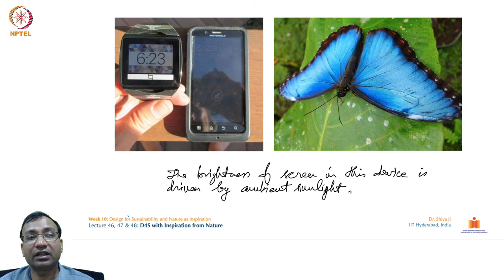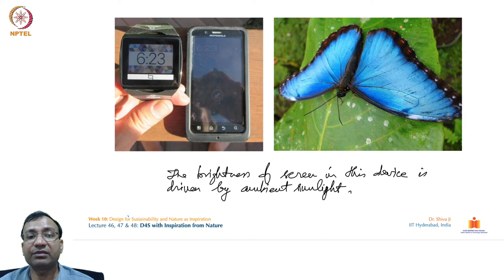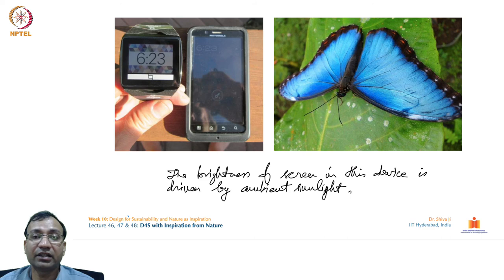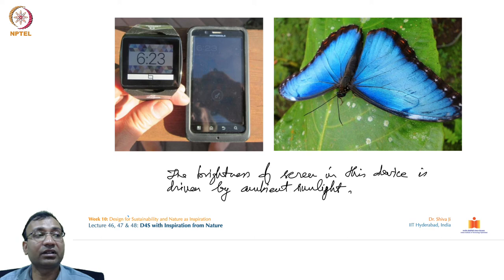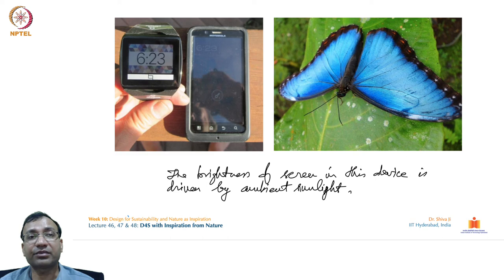A watch's electronic screen requires no battery power — its brightness is generated solely by ambient sunlight, like the Morpho butterfly that inspired the screen technology. The screen relies on spacing of microscopic optical elements to split sunshine into specific wavelengths and reflect them back to our eyes. This is a beautiful example of how naturally occurring optical phenomena can be utilized to create functional products without any electricity.